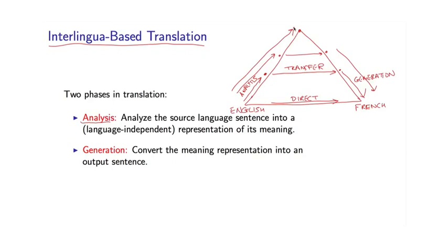In the analysis step, we go all the way up to this language-independent representation. Then, in the generation step, we take this language-independent representation and generate the foreign language. Critically, this depends on some definition of interlingua, which is some representation of the meaning of languages that is independent of language.